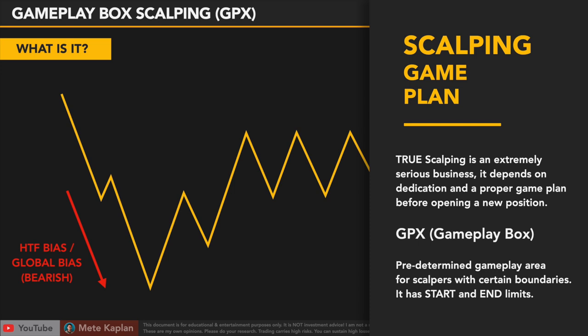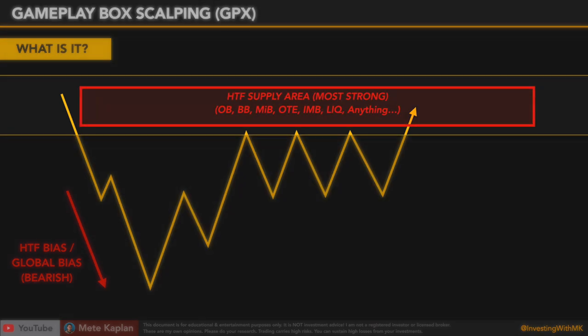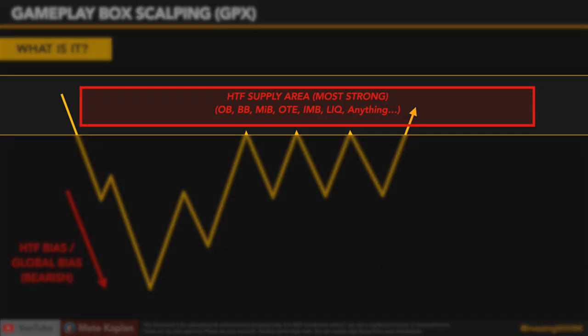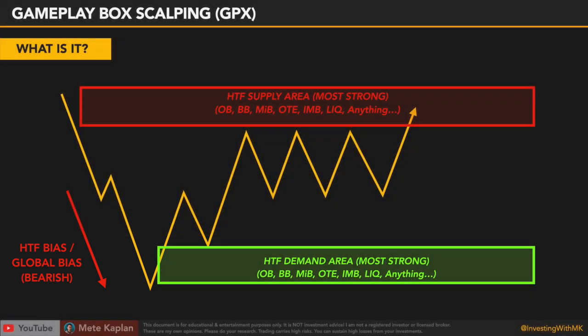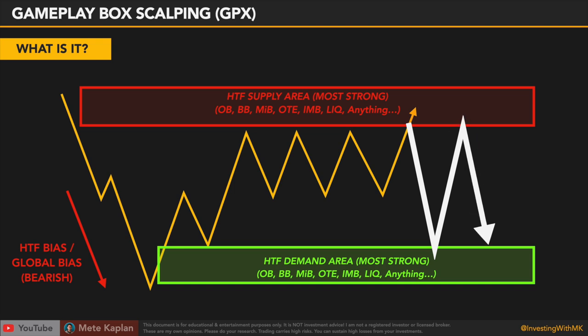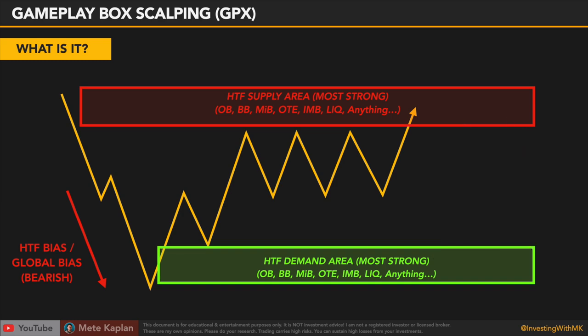As you know, price action gives us the ability to identify the best supply and demand areas. The first step is identifying the most powerful supply and demand areas in high time frames. What are these? Order blocks, breaker blocks, mitigation blocks, imbalances, swing failure patterns, and so on. Why? Because price bounces between supply and demand like table tennis balls. Just open your charts — any chart, Forex, Gold, Bitcoin — all it does is forever bounce between supply and demand zones.